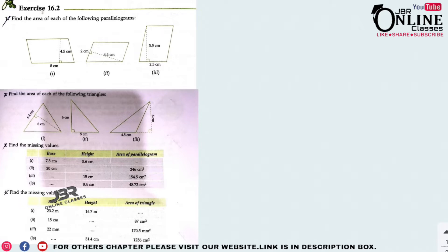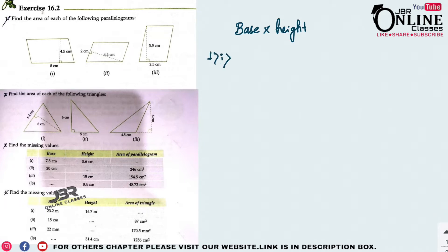Find the area of each of the following parallelograms. First we have to know the formula to find the area of a parallelogram. The formula is very easy: base × height. For sum number 1, base = 8 cm and height = 4.5 cm.